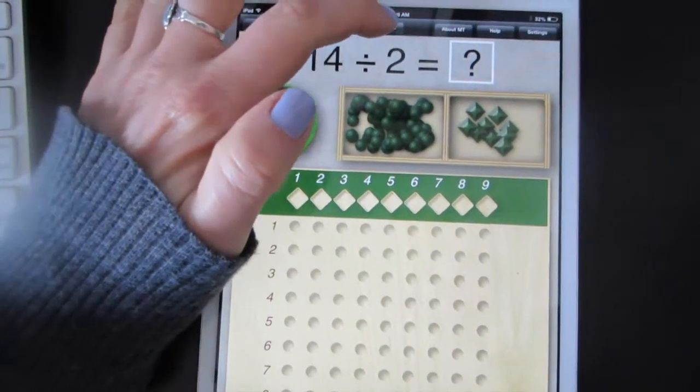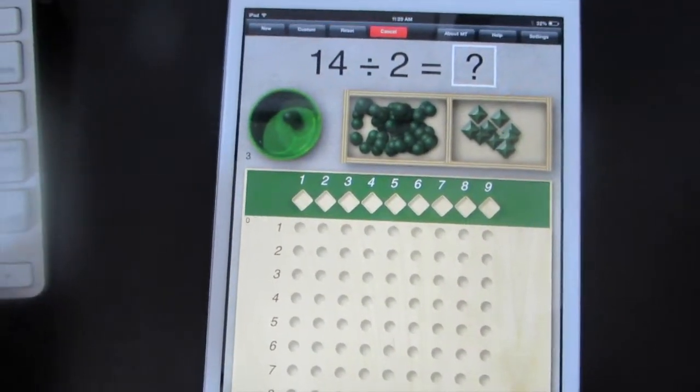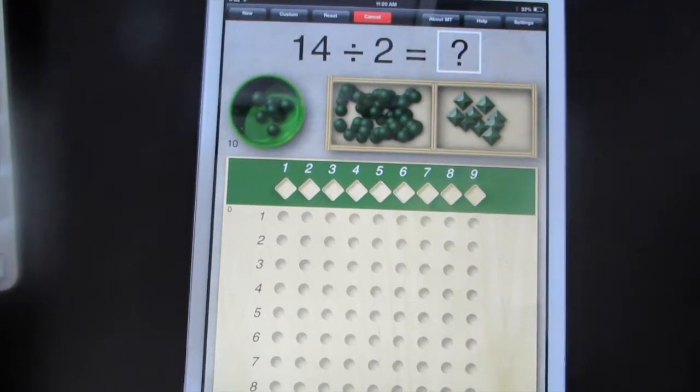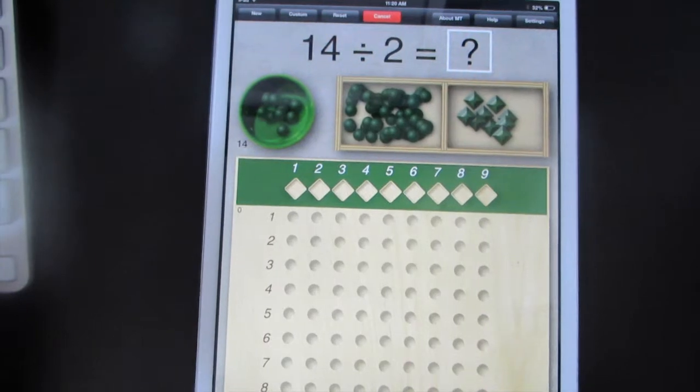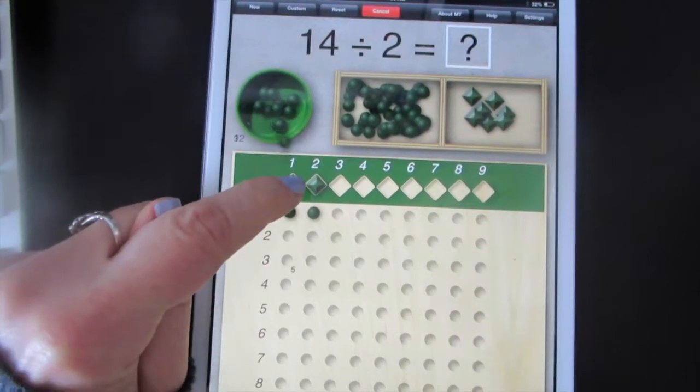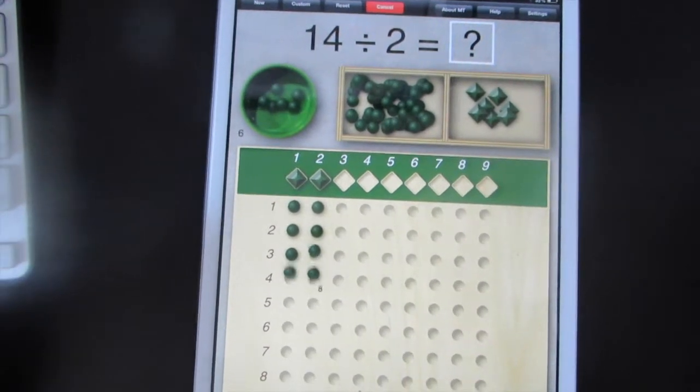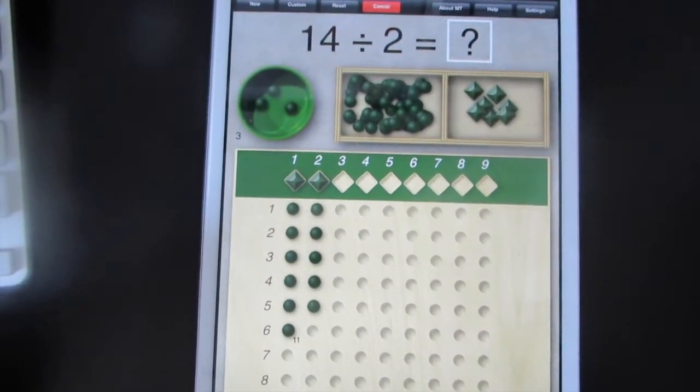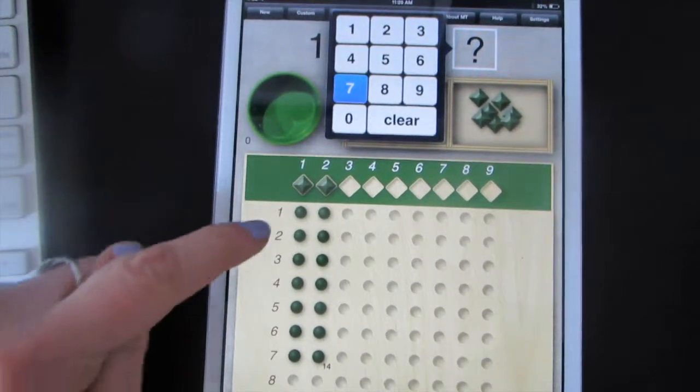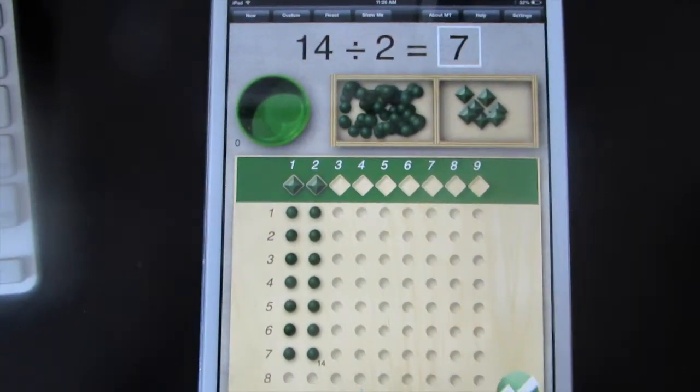Let's tap show me to see how they do it. 14 total split into two groups. 14 split into two even groups. Seven in each group.